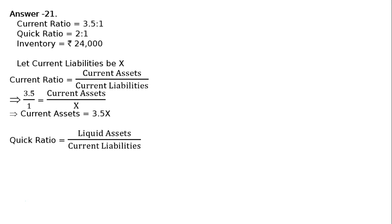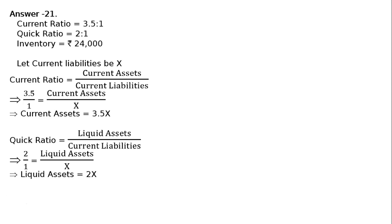The quick ratio formula is liquid assets upon current liabilities. That is, 2 upon 1 is equal to liquid assets upon X. By cross multiplying, liquid assets is equal to 2X.